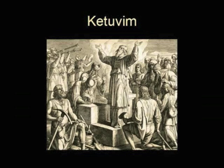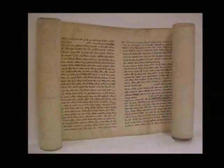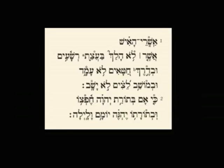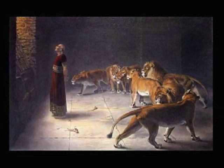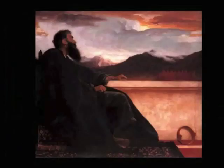The Ketuvim, or Writings, includes the period after the return from the Babylonian exile, approximately the 6th century BCE, and contains twelve books. The Ketuvim is made up of various writings that do not have an overall theme. This section of the Tanakh includes poems and songs, the stories of Job, Ruth, and Esther, the writings and prophecies of Daniel, and the history of the kings of Israel.